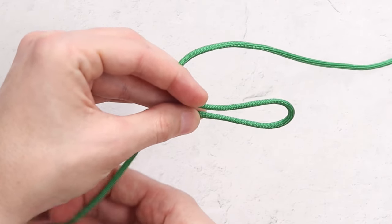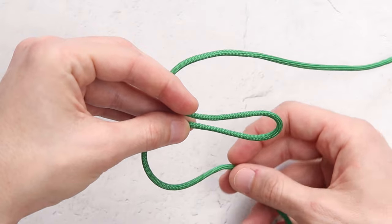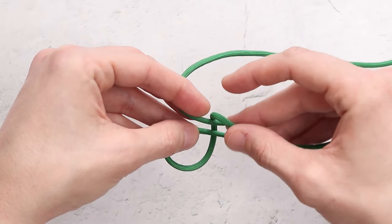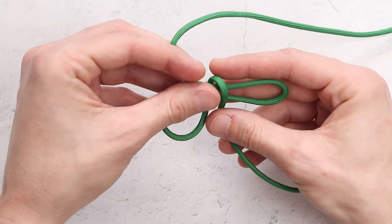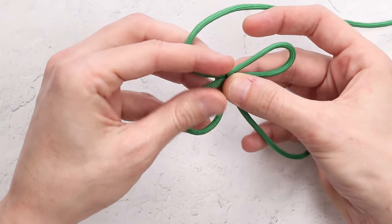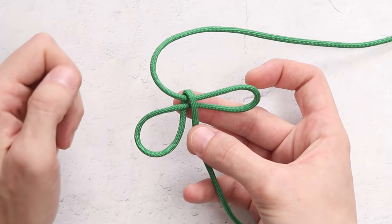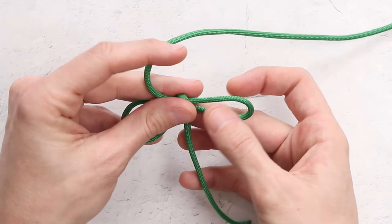Our second step is we're going to take the left working strand, we're going to go around the back of everything, and bring it back to the front. And I'm just going to pinch that right there, but it should look something like that.